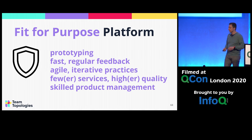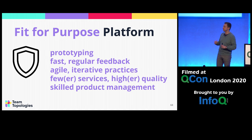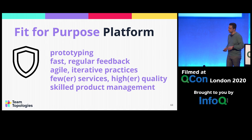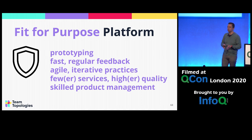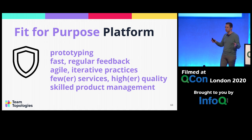Having a platform that's fit for purpose means using techniques like prototyping and getting regular feedback from our customers — they're part of our organization, right there. We should use iterative practices: agile, pair programming, TDD — all these things that help us get faster delivery with higher quality. Very importantly, we should focus on fewer services of higher quality and higher availability, rather than trying to do everything. Focus on what we really need and make sure those are of high quality. This requires good product management to understand priorities and keep the roadmap clear.